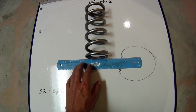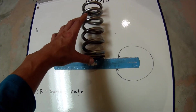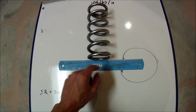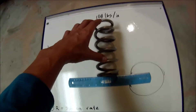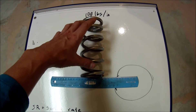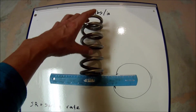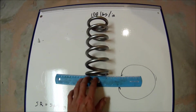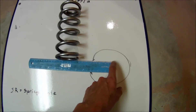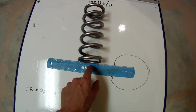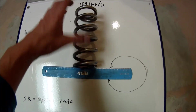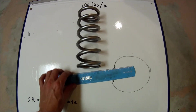So you put 100 pounds here and it's going to apply 200 pounds of force on the spring due to leverage. If it's applying 200 pounds of force, that means the spring is going to compress two inches — 100 pounds for the first inch and 100 pounds for the next inch.